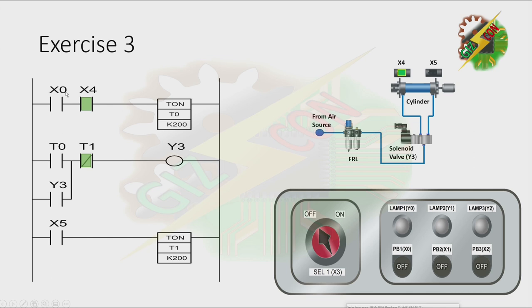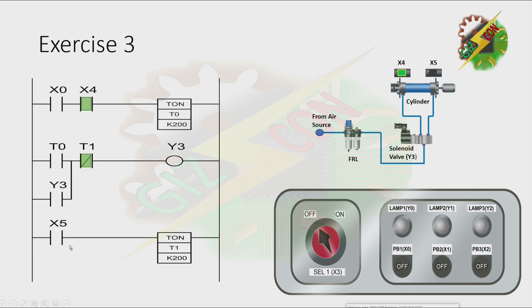This will be my answer to this exercise. When we press PB1, it will energize X0. Because the cylinder is at the fully retracted position, X4 is energized and that will cause Timer 0 to activate after 2 seconds. If Timer 0 is activated, it will turn on Y3. Y3 will not turn off even if Timer 0 is turned off because there is a latching. The only way to turn it off is by activating T1, and to activate T1 we need to energize X5, which is the fully extended position. Now let's have our simulation.